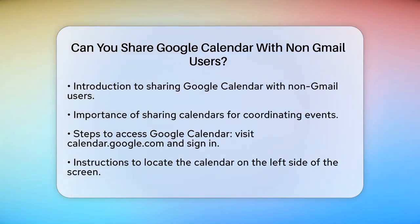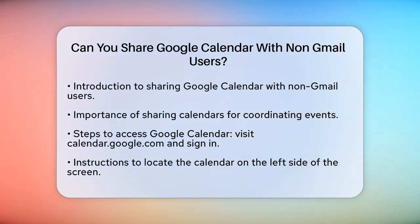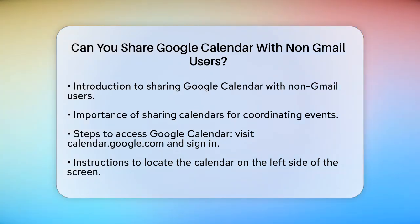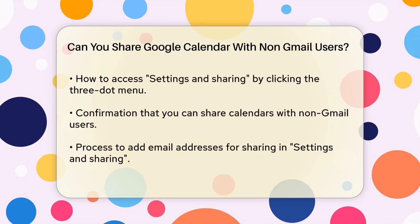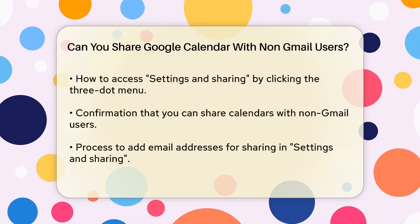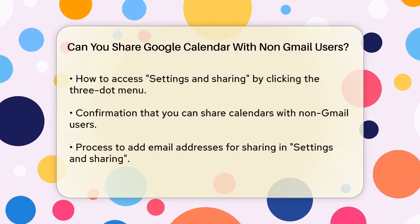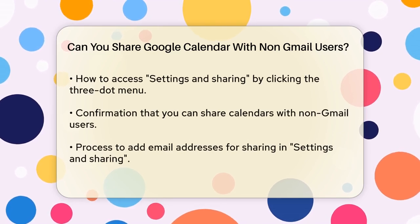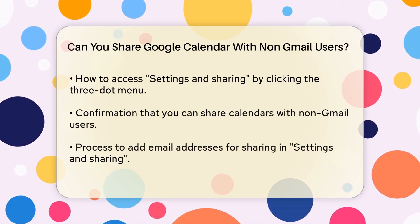To start, let's look at the basic steps involved in sharing a Google Calendar. You can share your calendar directly from the Google Calendar website. Go to calendar.google.com, sign in if you need to, and locate the calendar you want to share on the left side of the screen. Hover your mouse over the calendar, click the three-dot menu button, and select Settings and Sharing.